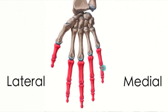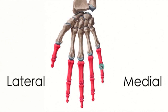The phalanges are the actual bones that define your fingers, going from your thumb, your index finger, your middle finger, your annular or ring finger, and your little finger.